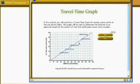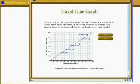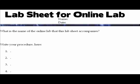I have two options: one is Start, the other one is Back. Of course we're going to pick Start. Before we continue, we need to take a quick moment and fill out our lab sheet for the online lab. The first question asks what the name of the online lab is. As you saw on the previous screen, the name of the lab is the Travel Time Graph. Go ahead and write that in right now.